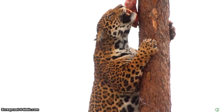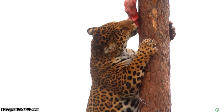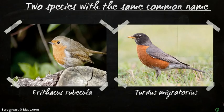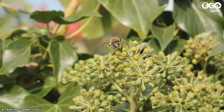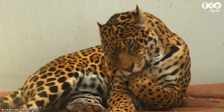So why not just call it a jaguar? Well, jaguar is its common name. But common names can differ from country to country or even within regions within a country. For example, one plant is called cleavers, sticky bud, or even goosegrass, depending on what part of the UK you're from. Sometimes two different species can share the same common name — in Europe, Erithacus rubecula is called the robin, while in North America, Turdus migratorius is also called the robin. The Latin binomial name makes things far less confusing — it's unique to the species and is the same in every country and every language. It's universal.